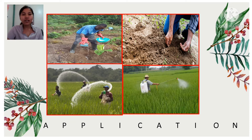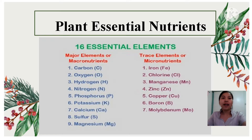It seems that you really understand our lesson, so let's proceed to our topic for today. Aside from the major nutrients that fertilizer contains, like NPK — Nitrogen, Phosphorus, and Potassium — scientists have identified essential nutrients and grouped them according to the relative amounts that plants need.